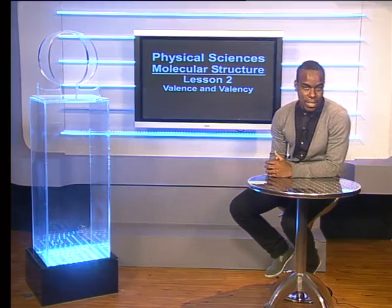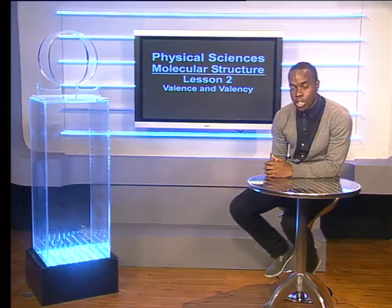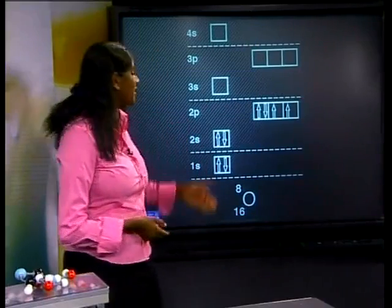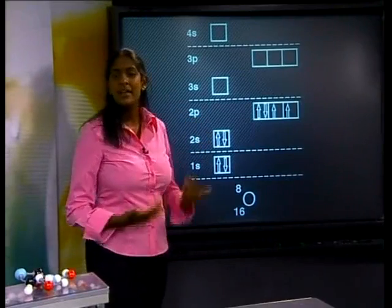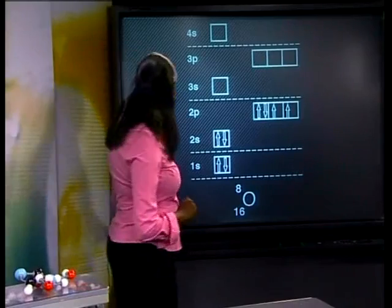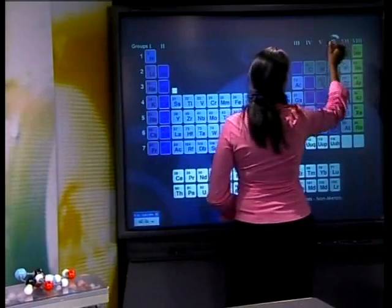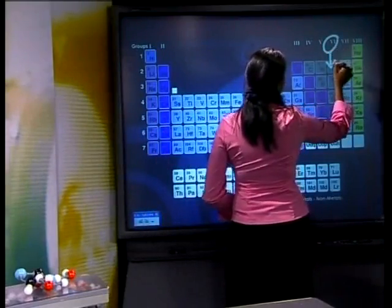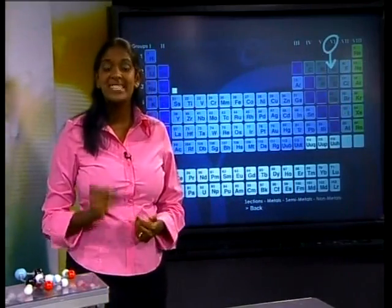Hello Grade 11s, welcome to this lesson on valence and valency. Let's use oxygen as our first example. We join Yasha as she reminds us about oxygen's structure. For oxygen, the number of electrons in the outer energy level is 6. This means oxygen has 6 valence electrons. And if you look for oxygen on the periodic table, you will find it in group 6. So the number of valence electrons is the same as the group number.